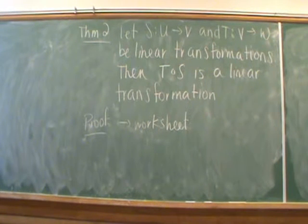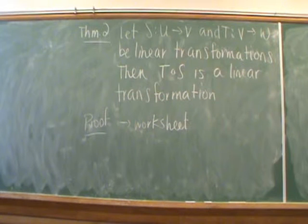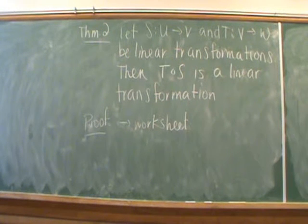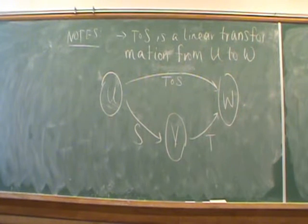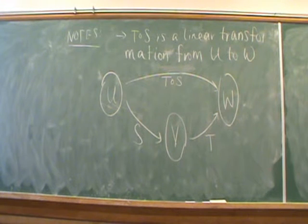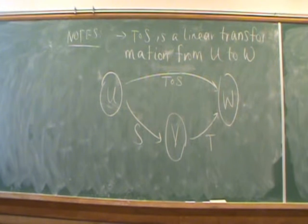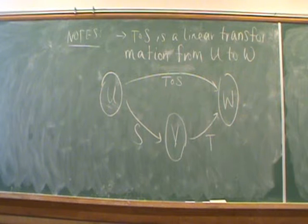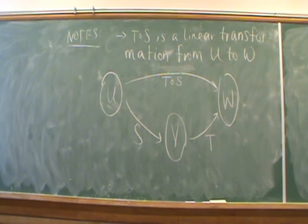To end this section on composition, here is an analogous theorem to what we saw for addition and scalar multiplication. Provided that S and T are linear transformations from their respective vector spaces, the composition is also going to be a linear transformation. To remark on that: T composed with S is a linear transformation from vector space U all the way to vector space W. S goes from U to V, and T goes from V to W, so composition gives us a shortcut from U to W without dealing with the intermediate space V.